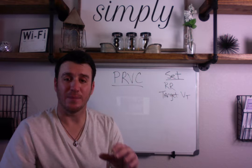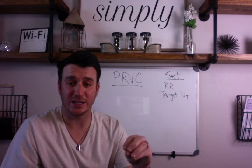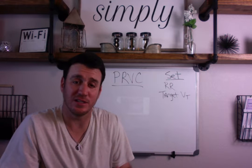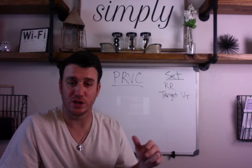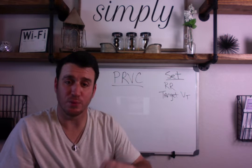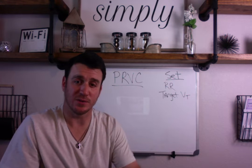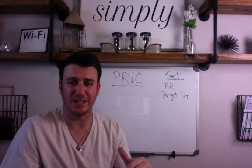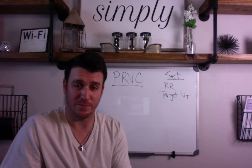The second thing you're going to set is a target tidal volume. This is key — we're going to deliver a target tidal volume. When you're talking about PRVC — pressure regulated volume control — you're trying to control volume but regulate it using pressure. So you're always going to set a target tidal volume, which should be anywhere between six to eight mLs per kilo of ideal body weight.